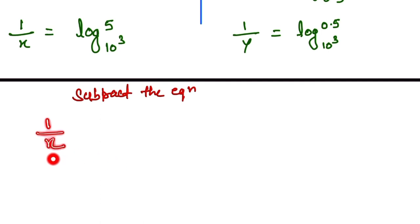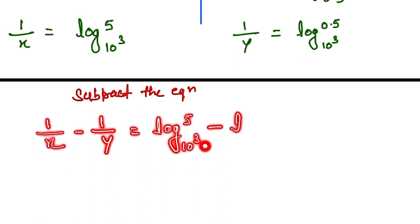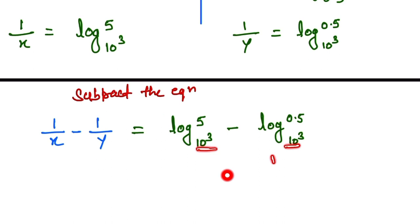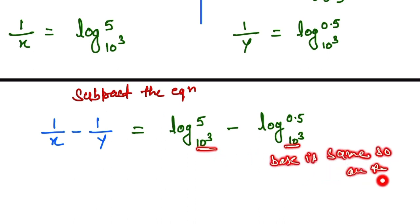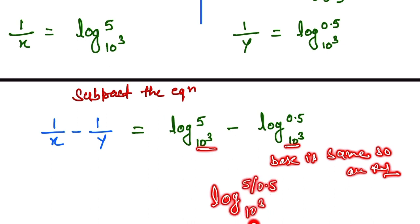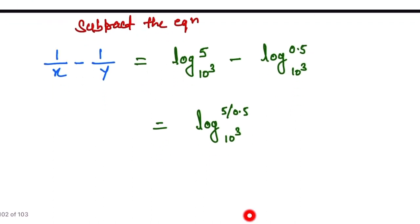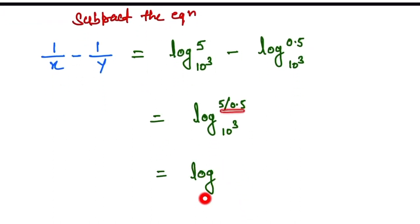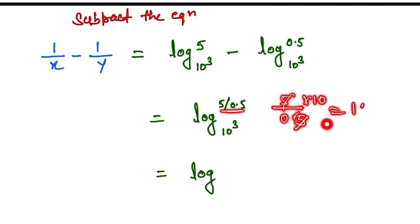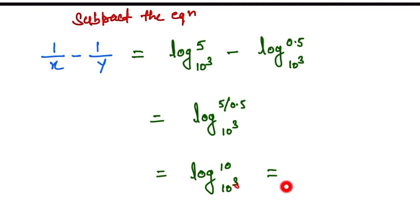So 1/x minus 1/y equals log base 10^3 of 5, minus log base 10^3 of 0.5. Since the bases are the same, we apply the log subtraction rule: this becomes log base 10^3 of (5 divided by 0.5). Now 5 divided by 0.5 equals 10, so we have log base 10^3 of 10.